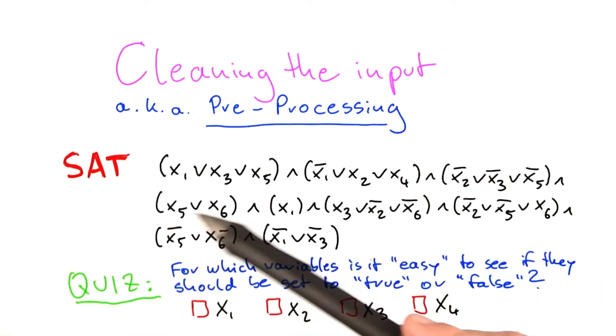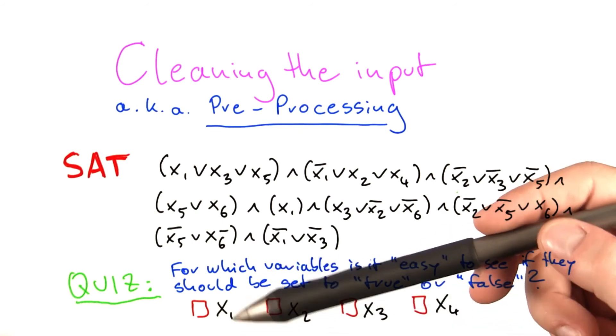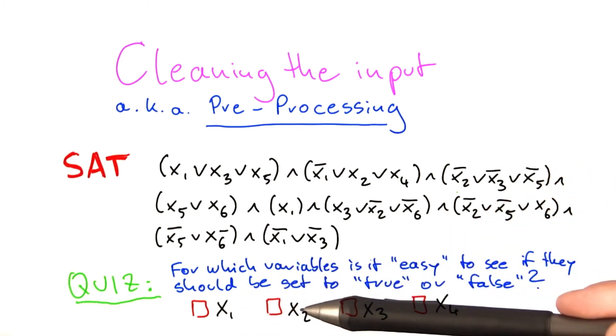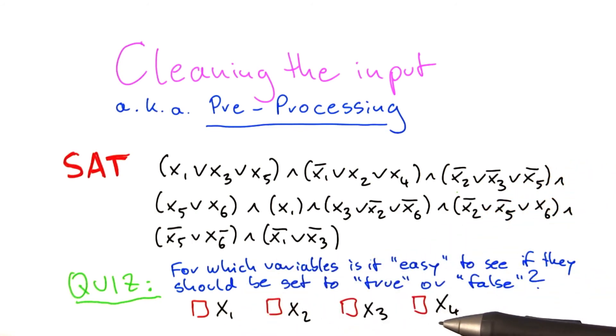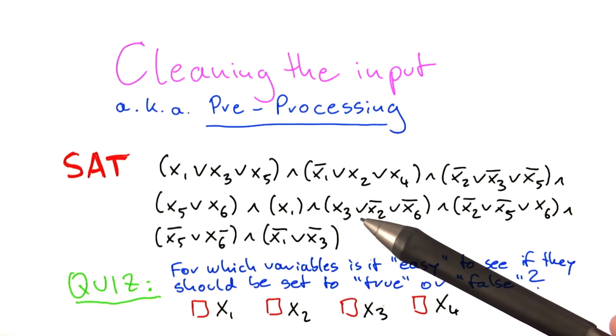So what I would like you to do is to look at this Boolean formula here and then consider the variables x1, x2, x3, and x4 and for each of those variables, determine if it's easy to see if they should be set to true or false. And by easy, I mean without actually trying around different truth assignments for the other variables.